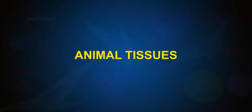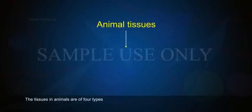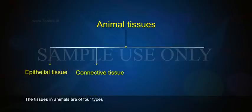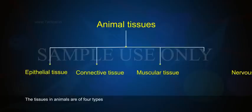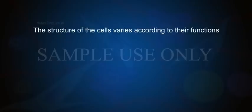Animal Tissues. The tissues in animals are of four types: 1. Epithelial Tissue, 2. Connective Tissue, 3. Muscular Tissue, 4. Nervous Tissue. The structure of the cells varies according to their functions.